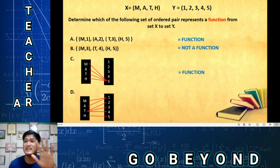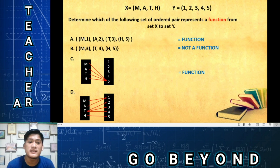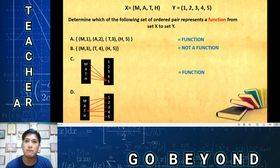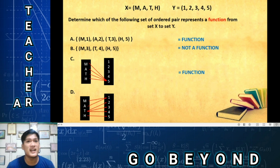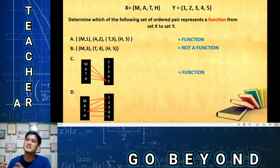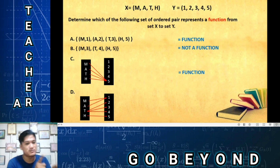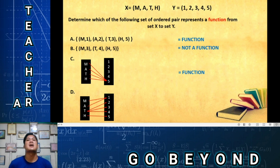Letter C is a function. You might be confused because the value 5 is used multiple times. But remember: x must correspond to one and only one value of y. m corresponds to 5, a corresponds to 5, t corresponds to 5, h corresponds to 5 — each x still corresponds to only one value of y. It doesn't matter if y is repeated. So letter C is a function.